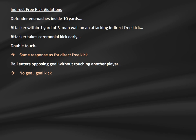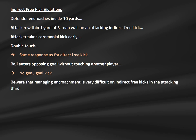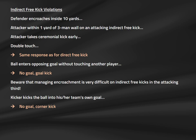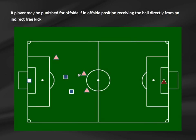Defensive encroachment is more complex on indirect free kicks because the attacking team often touches the ball short to a teammate to create the second touch before shooting. Defenders may anticipate this and rush in to cut the angle, so the referee must manage the gamesmanship from both sides. As with direct free kicks, an indirect free kick may not be kicked directly into a player's own goal — the restart would be a corner kick for the opposing team. Offside rules for indirect free kicks are the same as for direct free kicks: if a player receives the ball in an offside position directly from an indirect free kick, offside should be called.